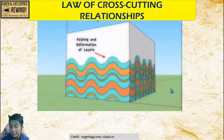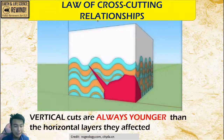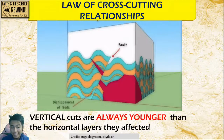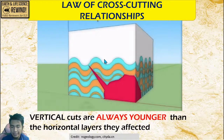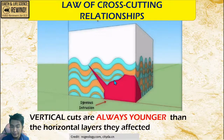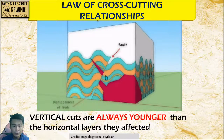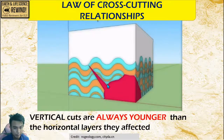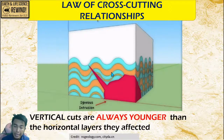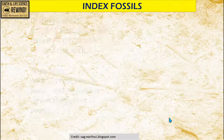Cross-cutting relationship states that vertical cuts or fault lines are always younger than the horizontal layers they have affected. Here you can see that there were yellow and green layers, and then there was an igneous intrusion and a fault line afterwards. So the layers were the first ones to form, and afterwards the igneous intrusion, and next is the fault line.